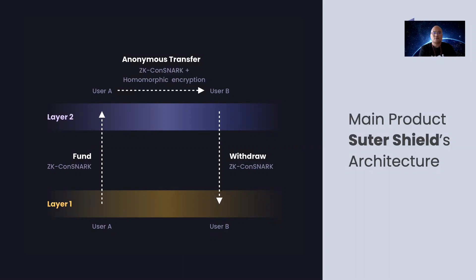Similarly, in the S3O system, each user will have a layer one account, such as an Ethereum account, which corresponds to the bank account, and a second layer S3O account, which corresponds to the PayPal account. The user can deposit money from their layer one account to their S3O account, transfer money between S3O accounts, and also withdraw money from the layer two account back to the layer one account. The reason we call ourselves anonymous PayPal is because the transfer between layer two S3O accounts is completely private — we guarantee user identity anonymity and transaction amount confidentiality.